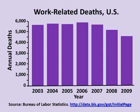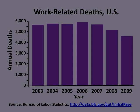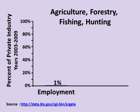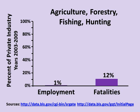Risks are higher in certain industries. For instance, the industry known as agriculture, forestry, fishing, and hunting employs only about 1% of the U.S. workforce, but it accounts for 12% of all work-related deaths. Other hazardous industries include mining, transportation, warehousing, and construction.